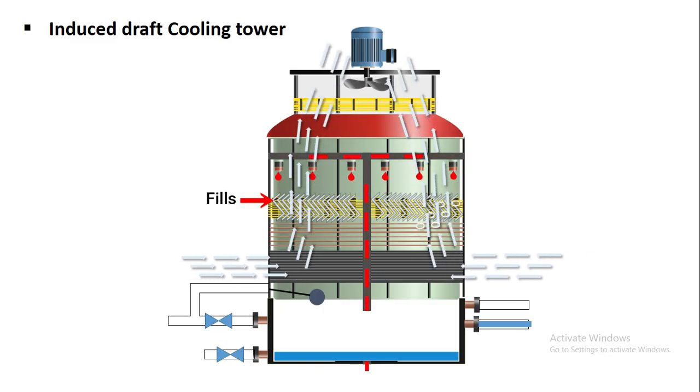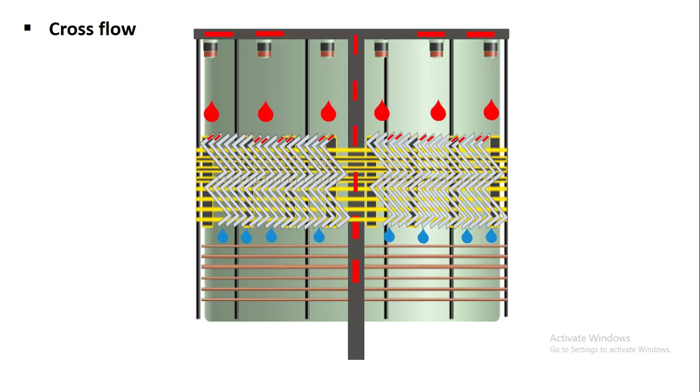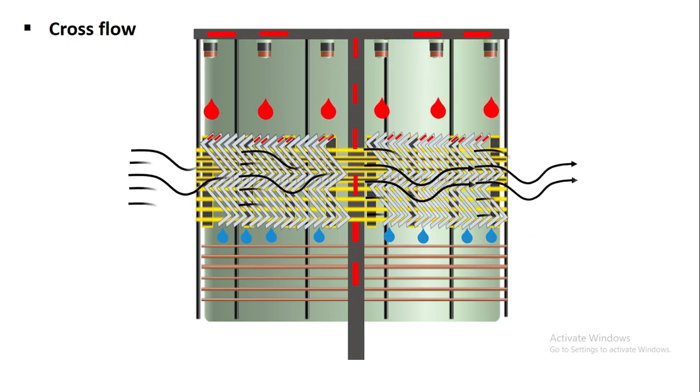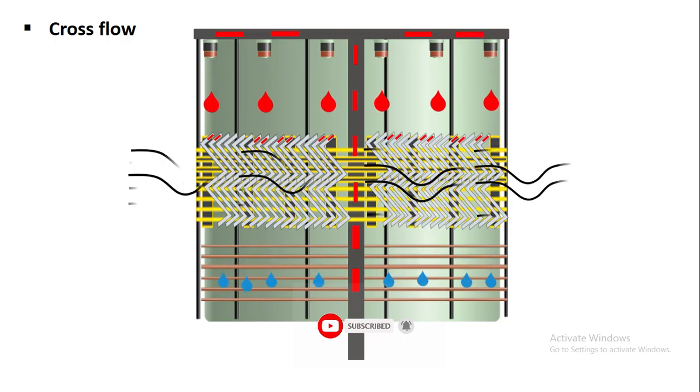Depending on how the air enters there are two main designs, cross flow and counter flow. In the cross flow towers air flows horizontally through the fills while water flows vertically downward. This means the air and water paths cross at right angle directions. The main advantage of cross flow cooling tower is lower pumping head is required because water is distributed by gravity.